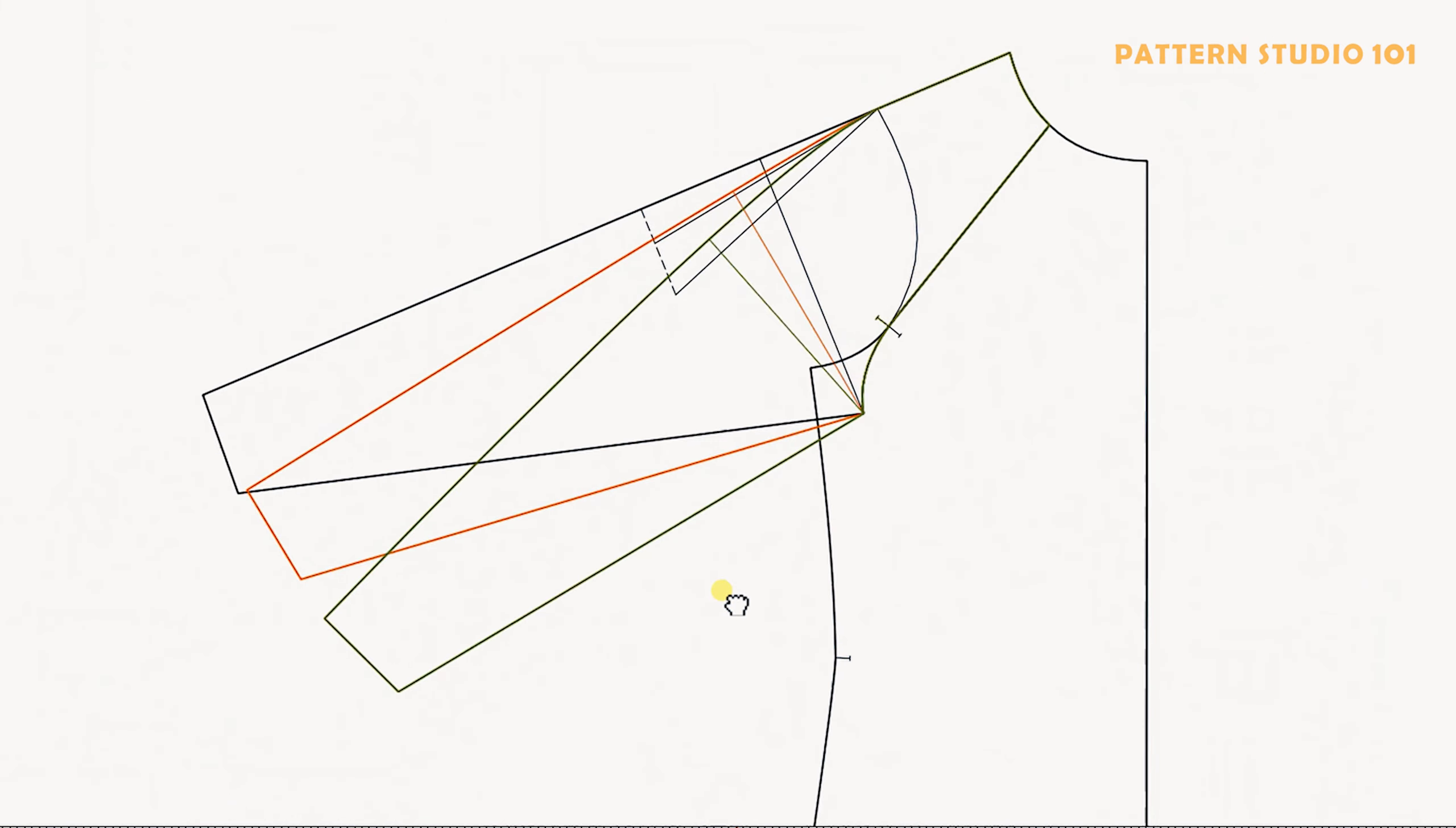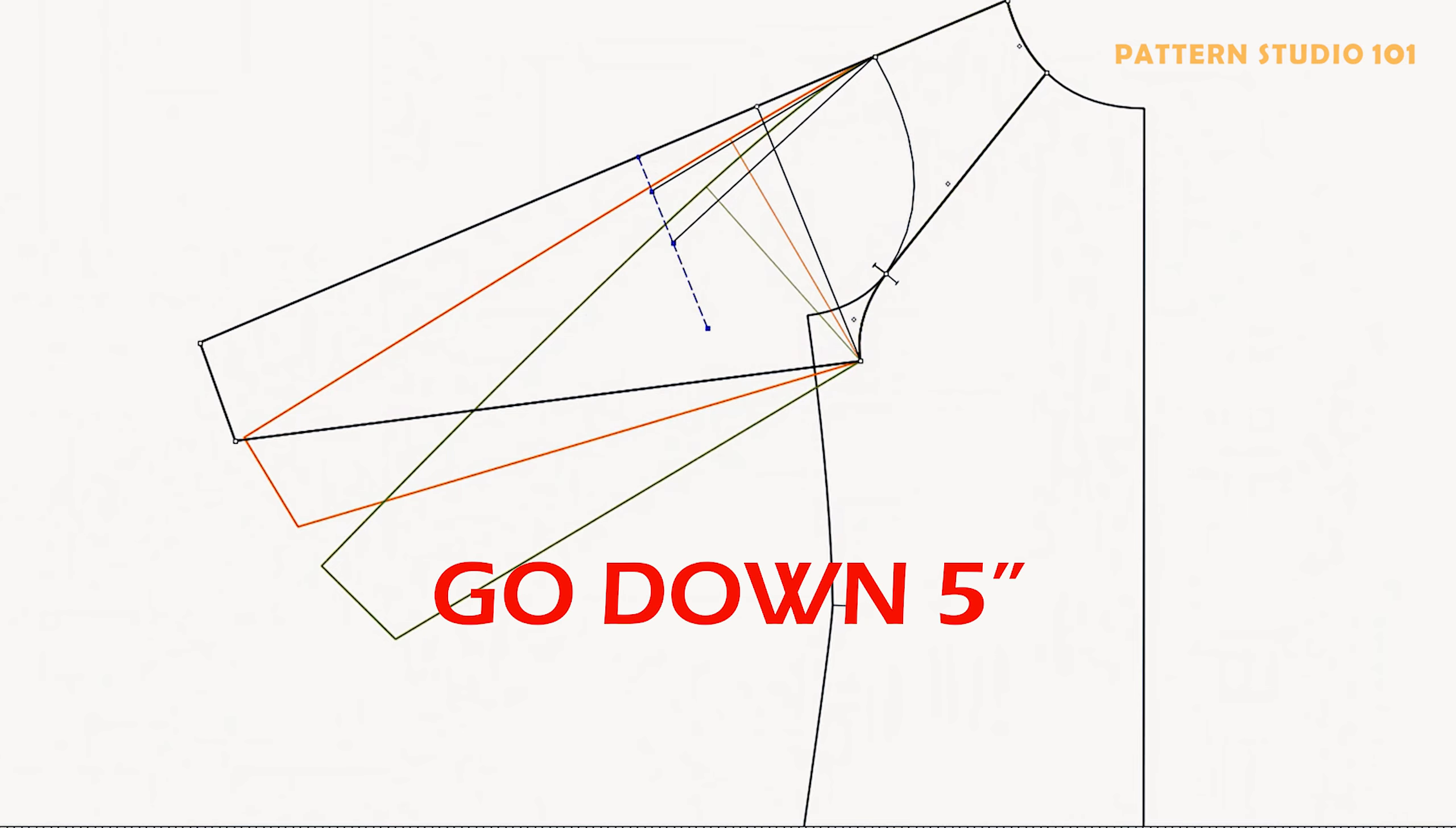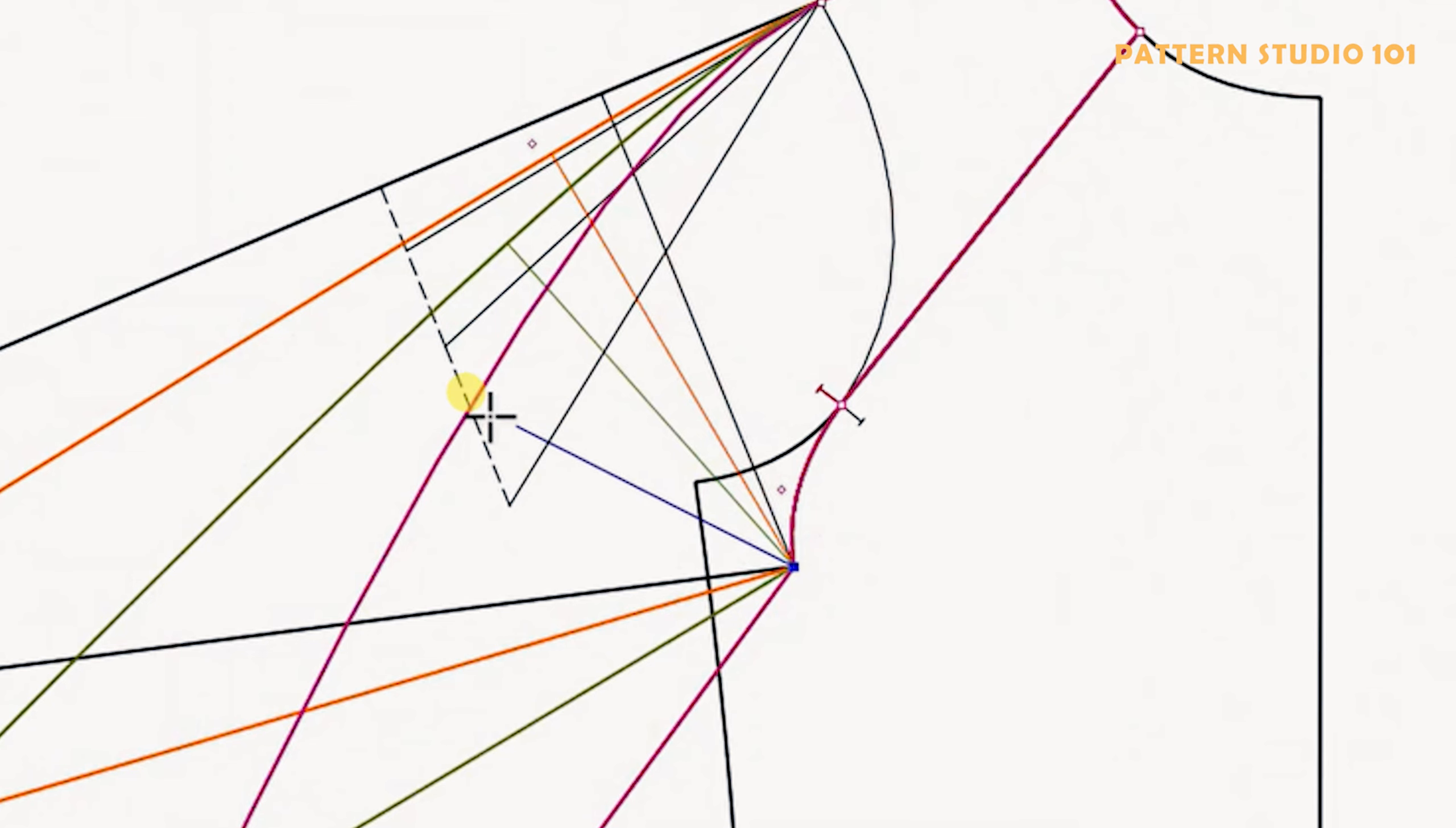Let's draw one more. Let's go down 5 inches this time. Connect to the shoulder point and extend the sleeve length. Same width of the sleeve hem, curved the shoulder. Let's draw a bicep for this as well.